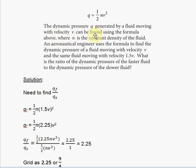The dynamic pressure is expressed in terms of n, the constant density of the fluid, and the velocity V of the fluid. An aeronautical engineer uses the formula to find the dynamic pressure of a fluid moving with velocity V and the same fluid moving with velocity 1.5V. What is the ratio of the dynamic pressure of the faster fluid to the dynamic pressure of the slower fluid?